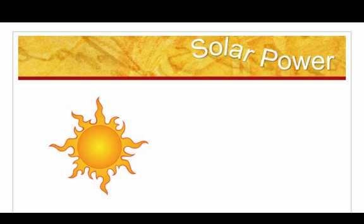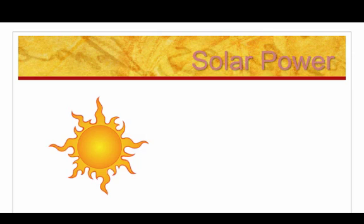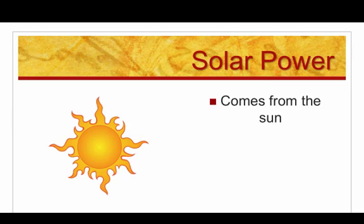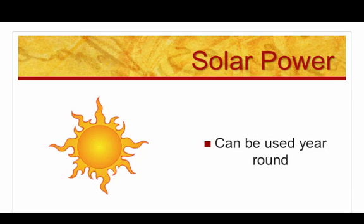The first type of alternative energy you are going to learn about is solar power. Solar power, as the name suggests, comes from the sun. Sunlight is converted to energy that can be used to power small individual objects as well as entire buildings. Since the sun hits every area of the world, solar power has the potential for widespread adoption as long as the cost can be minimized. Solar power can also be used year round.